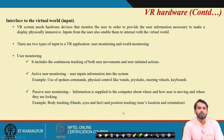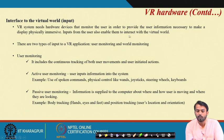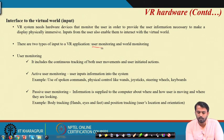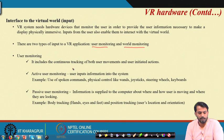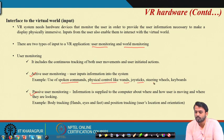Regarding the interface to the virtual world, a VR system needs hardware devices that monitor the user to provide information necessary to make the display physically immersive, and to enable user interaction with the virtual world. There are two types of input to a VR application: user monitoring and world monitoring. User monitoring includes continuous tracking of user movements and user-initiated actions, and has two kinds: active and passive. In active user monitoring, the user inputs information into the system — examples include spoken commands, physical controls like wands, joysticks, steering vehicles, and keyboards.